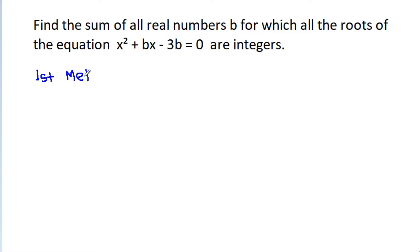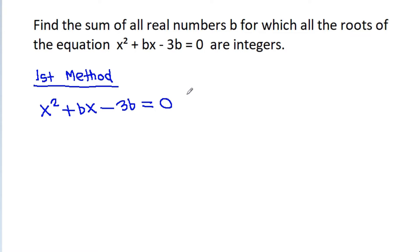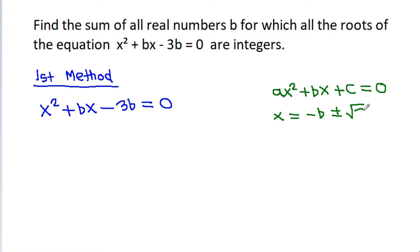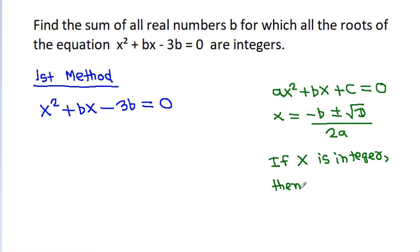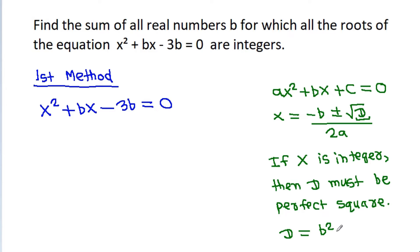First method: we have x squared minus bx minus 3b equals 0. For any quadratic equation ax squared plus bx plus c equals 0, x equals negative b plus or minus square root of the discriminant D over 2a. And if x is an integer, then D must be a perfect square. And D equals b squared minus 4ac.